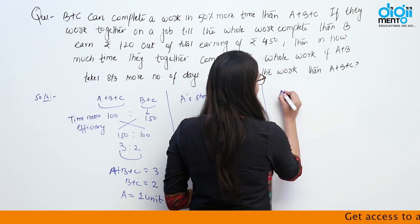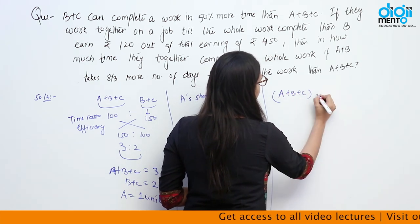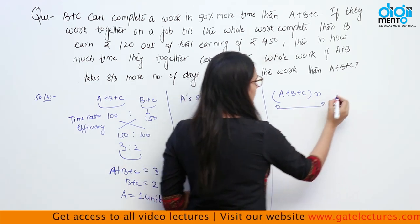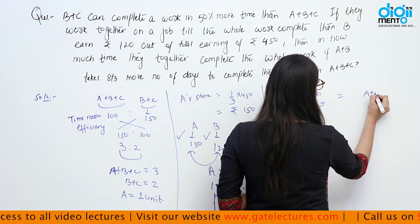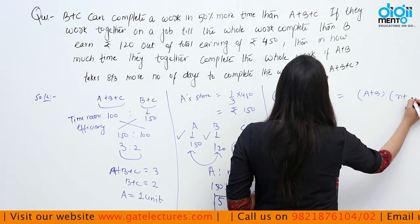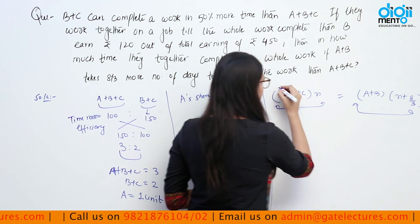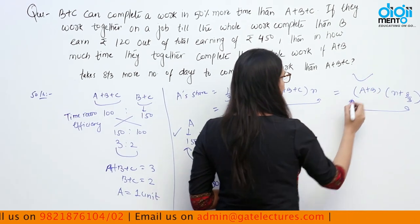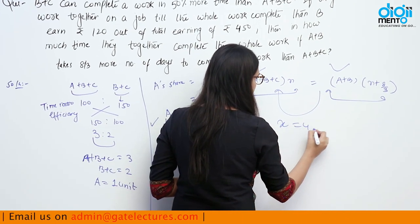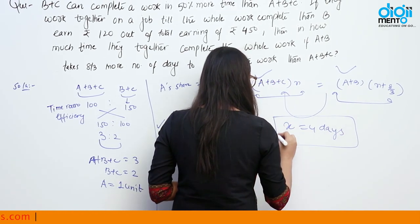Suppose A, B, C together take X days to complete the work, and A+B takes X + 8/3 days. Using the efficiency ratio A:B:C = 5:4:6 and setting up the total work equation, solving gives X = 4 days. So A, B, C together complete the whole work in 4 days.